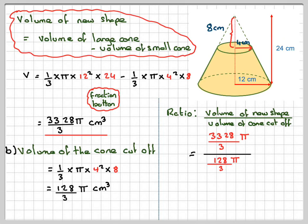If we're dividing fractions, we write down the first one, 3328π over 3. We change the sign to multiplication and then we flip the other fraction. So it's 3 over 128 times π.